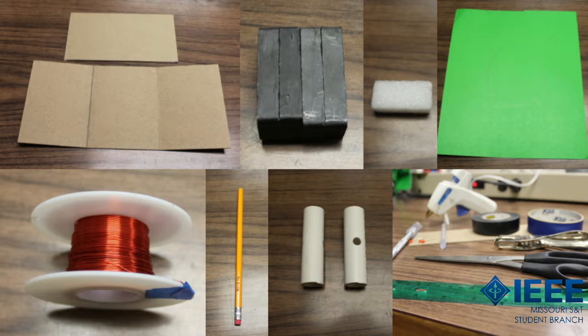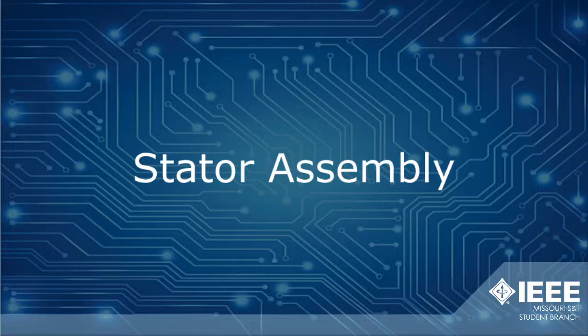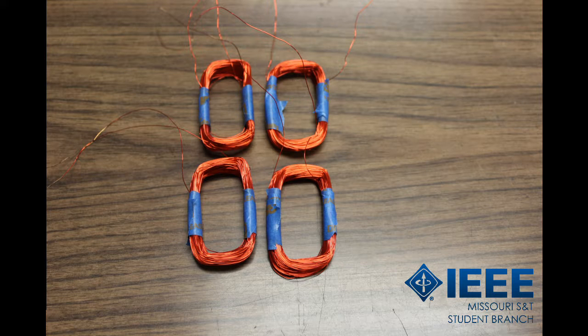A windmill is simply a generator with blades attached. When wind moves the blades, the generator creates power. A generator consists of two main components: the stator and the rotor. We're going to start by assembling our stator. As the name suggests, this will be the stationary part of our generator.